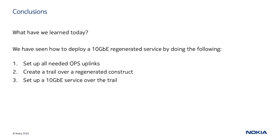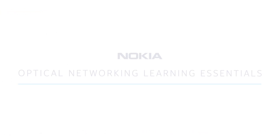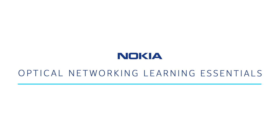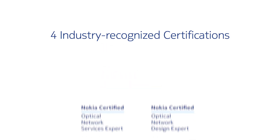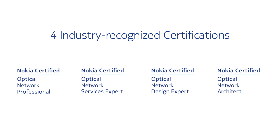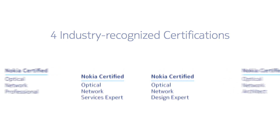Today, we have seen how to deploy a 10 GBE service over a regenerated ODU4 infrastructure using the templates provided by NFMT. The steps require the provisioning of the needed OPS uplinks and the creation of a trail that includes the 3R section. On top of this trail, the service can be created. Thanks for watching and look for more videos in our Optical Networking Learning Essentials series. Whether your goal is to enhance your Optical Networking skills or demonstrate your expertise through one of our four industry-recognized certifications, the Optical Networking Certifications program is here to get you, your career, and your organization on the right path.